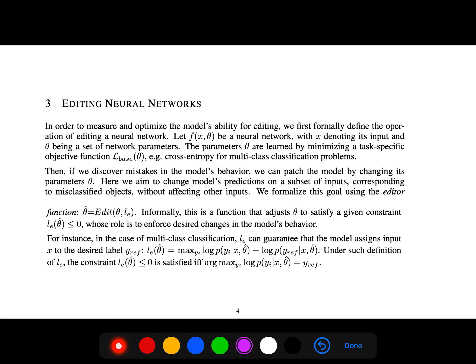In order to measure and optimize the model's ability for editing, we first formally define the operation of editing a neural network. Let f be a neural network with x denoting its input and theta being set for network parameters. The parameters are learned by minimizing a task-specific objective function, for example, cross-entropy for multi-class classification.